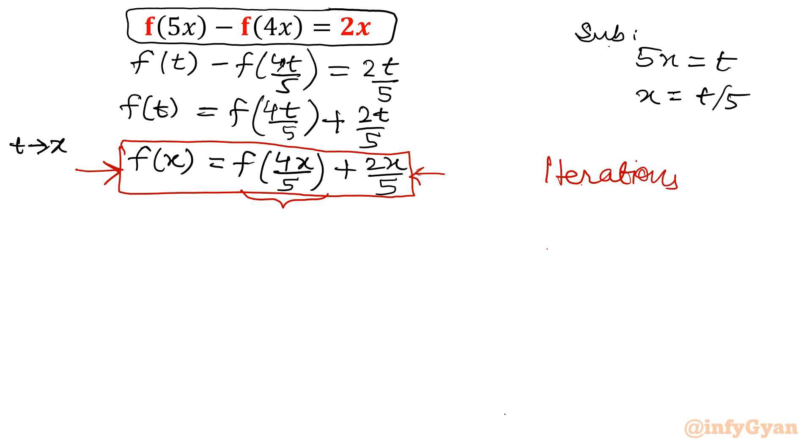We will find out f of 4x over 5. So how can we find it out? Let me consider this is our equation number 1. So I am targeting f of 4x over 5. This is my target to find out f of 4x over 5 from the same equation. So let me substitute x as 4x over 5.